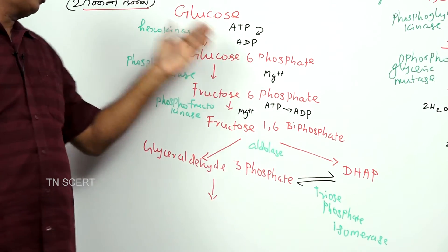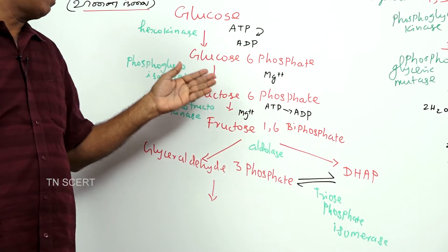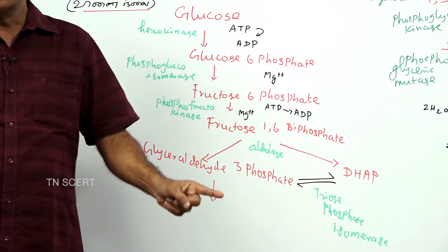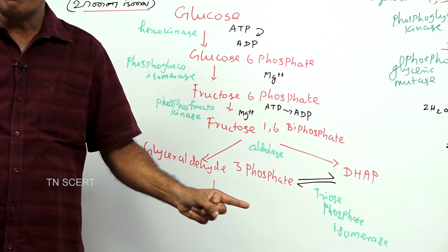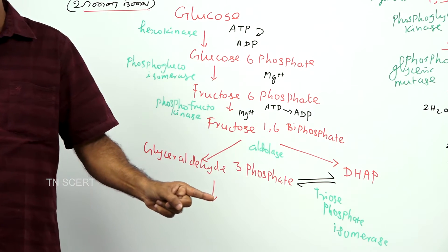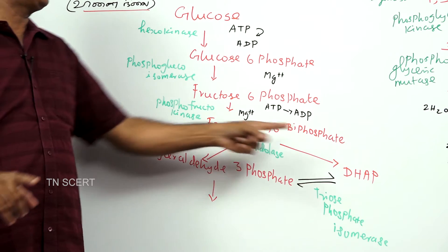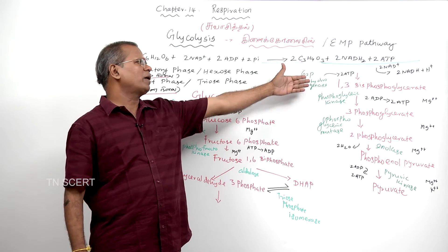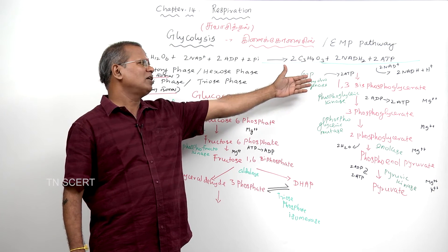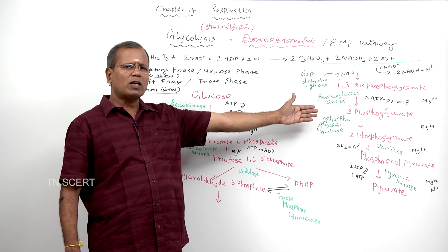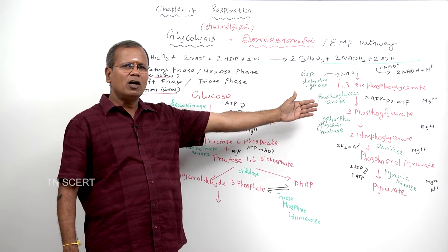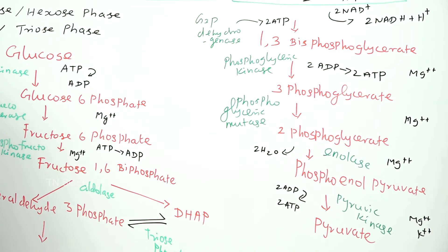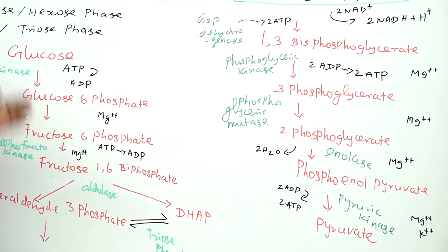The ten chemical intermediates of glycolysis are: glucose, glucose 6-phosphate, fructose 6-phosphate, fructose 1,6-bisphosphate, glyceraldehyde 3-phosphate and dihydroxyacetone phosphate, 1,3-bisphosphoglyceric acid, 3-phosphoglyceric acid, 2-phosphoglyceric acid, phosphoenol pyruvic acid, and finally pyruvic acid.